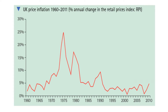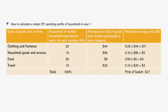This is the UK price inflation from 1960 through to 2011, showing the percentage annual change in the Retail Price Index, or RPI. Notice that in 1975 it was over 25 percent. Nowadays it is a much more reasonable figure, with the value being under four percent. How do we calculate a Consumer Price Index?